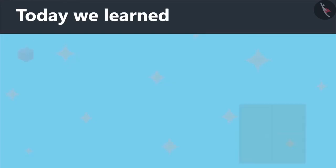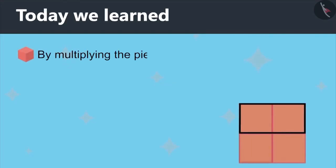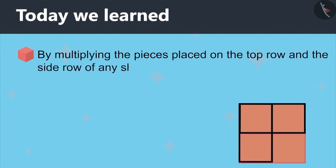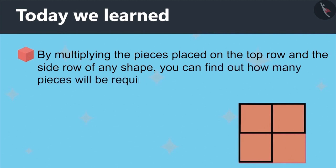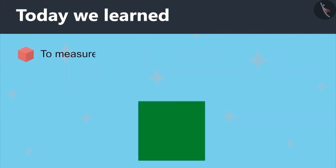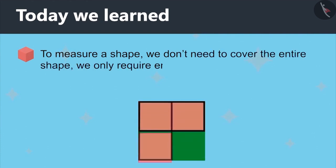Today we learned, by multiplying the pieces placed on the top row and the side row of any shape, you can find out how many pieces will be required to cover the shape completely. That is, to measure a shape, we don't need to cover the entire shape, we only require enough pieces to cover the top and side edges.